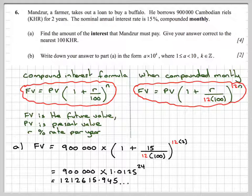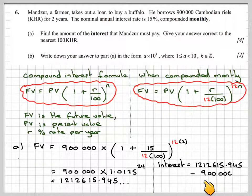That's the total future value. However, the interest paid will be 1,212,615.945 - 900,000.